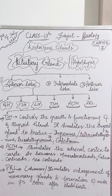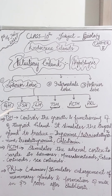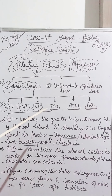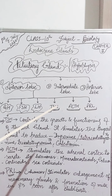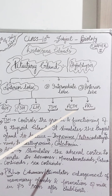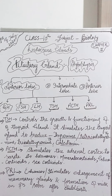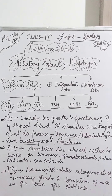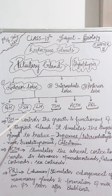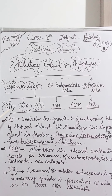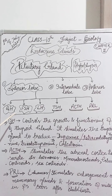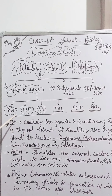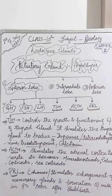These six hormones are growth hormone, follicle stimulating hormone, luteinizing hormone, thyroid stimulating hormone, adrenocorticotropic hormone, and prolactin. In our previous classes, we discussed growth hormone, follicle stimulating hormone, and luteinizing hormone.